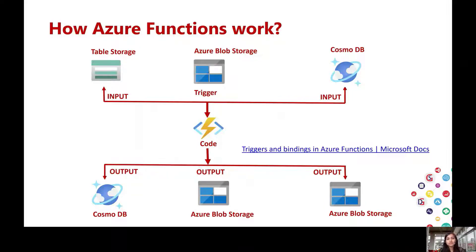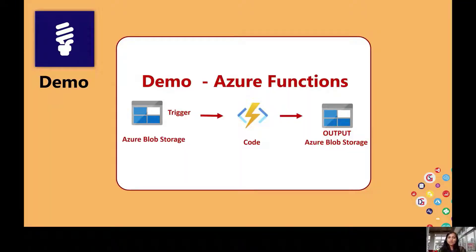Here is a link where you can find which sources you can use as a trigger, which sources you can use as input parameters, and which sources you can use as output parameters. Now let's start with the demo. In my demo, I have a blob storage as an input container and trigger, blob storage as an output, and a piece of code which is an Azure Function.